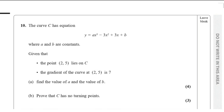Question number 10. The curve C has equation y equals ax cubed minus 3x squared plus 3x plus b, where a and b are constants. Given that the point (2, 5) lies on C and the gradient of the curve at (2, 5) is 7. Part a: find the values of a and b, which carries 4 marks. Part b: prove that C has no turning points, which has 3 marks.